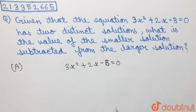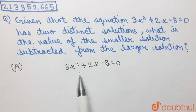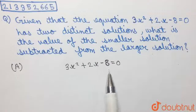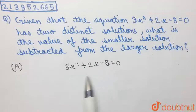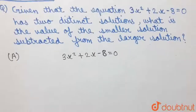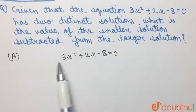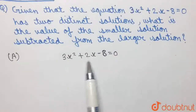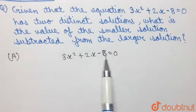So, basically we have to solve this quadratic equation for the two solutions and then subtract the smaller obtained solution from the larger solution that has been obtained. Now, if we observe, this is a quadratic equation that can be easily solved by factorization method.